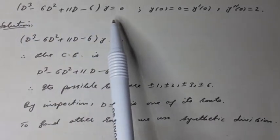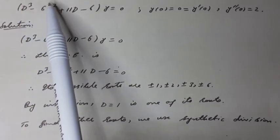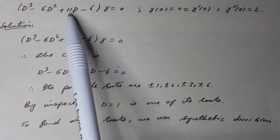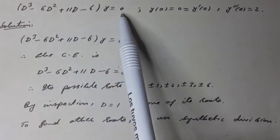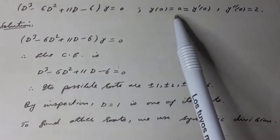Solve the homogeneous linear differential equation: d cube y over dx cube minus 6 d square y over dx square plus 11 dy over dx minus 6y equal to 0, along with initial conditions y at x is equal to 0 equal to 0.